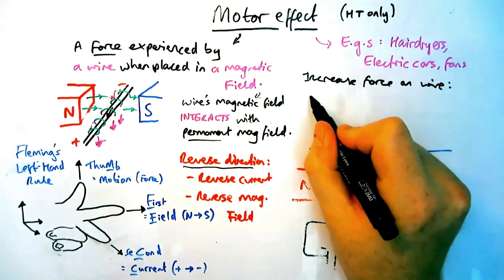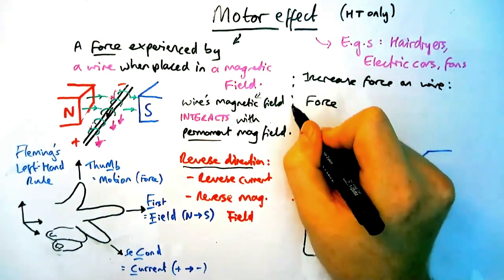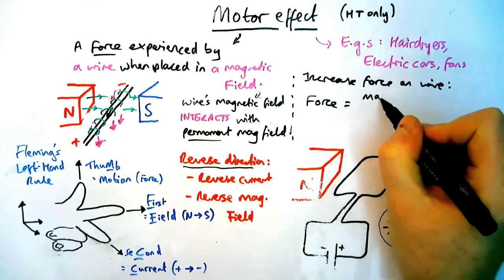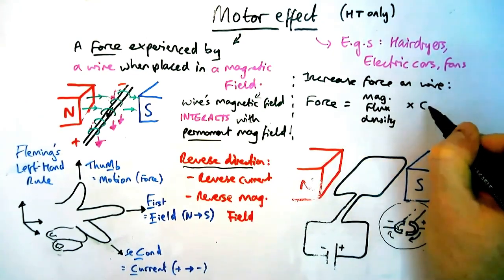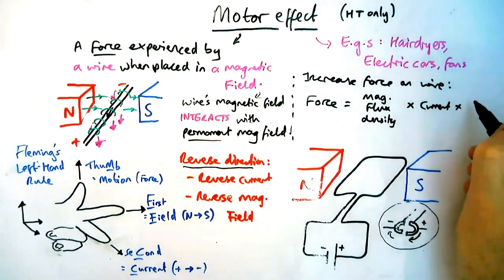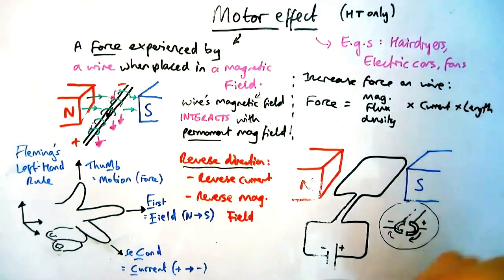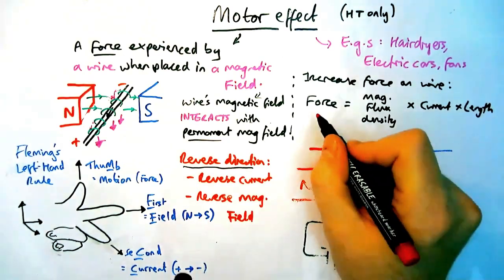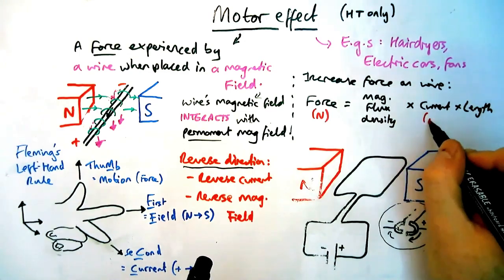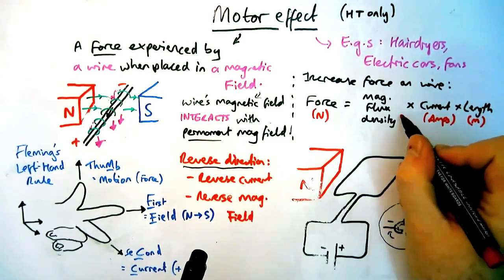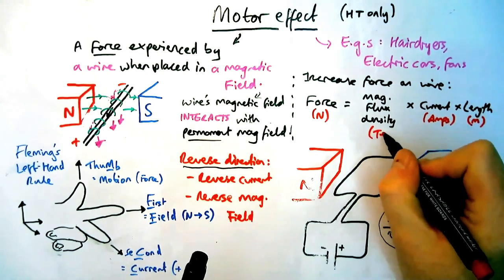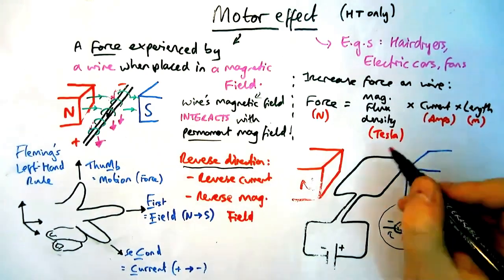It states that the force on the wire could be calculated by multiplying three factors together. Factor one is something called the magnetic flux density which is essentially the magnetic field, times by the current, times by the length of wire in the field. The units we should know: force is in newtons, current is in amps or amperes, length of wire has to be in meters not centimeters, and magnetic flux density is measured in teslas.